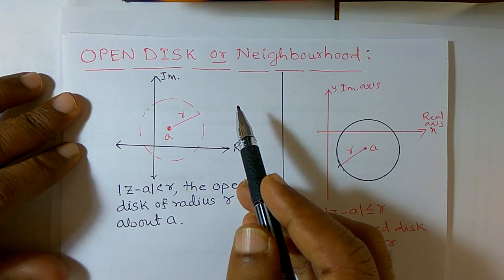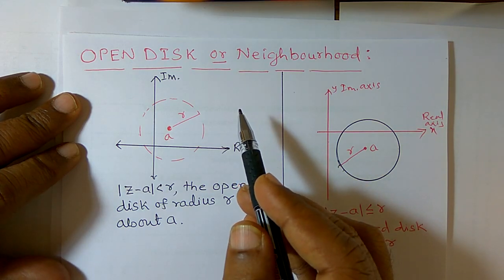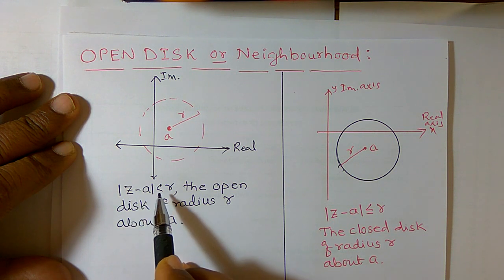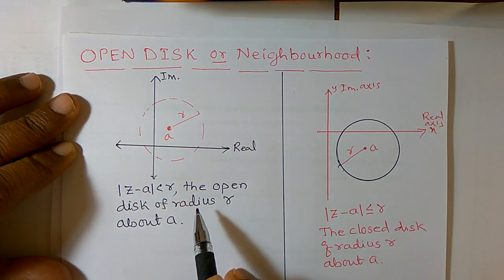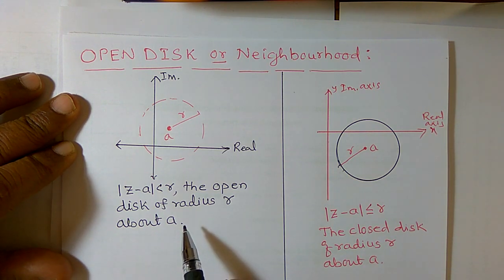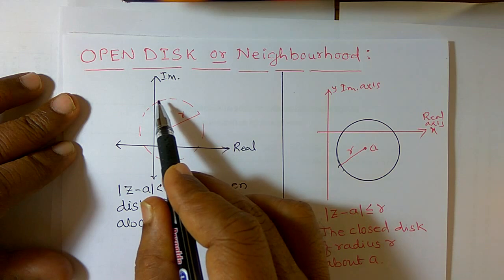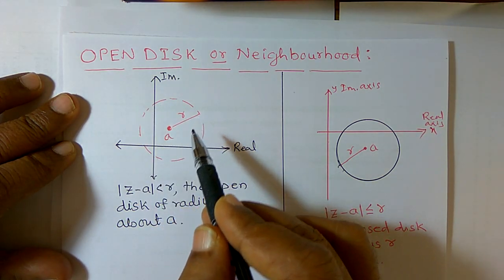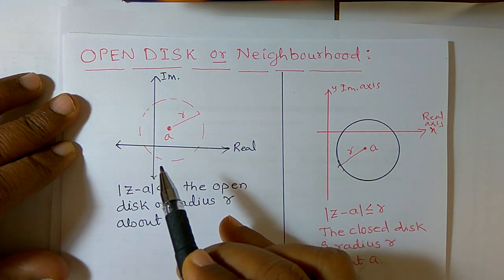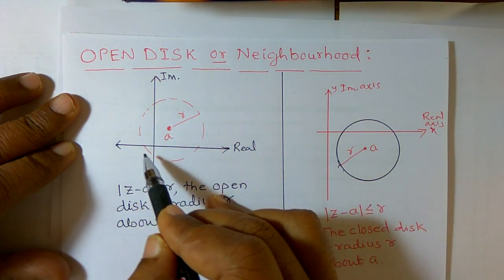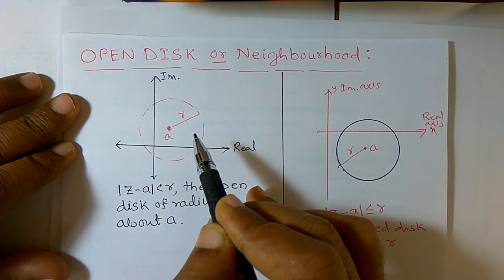First I want to discuss about open disk. It is usually denoted by the inequality: modulus of z minus a is less than r. We call it the open disk of radius r about a. Diagrammatically, it represents a circle with radius r and center at a, and it is usually drawn using dashed lines.